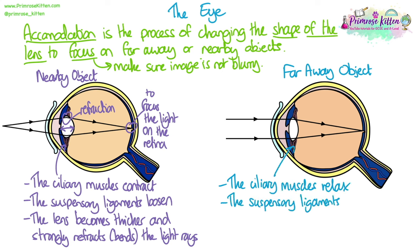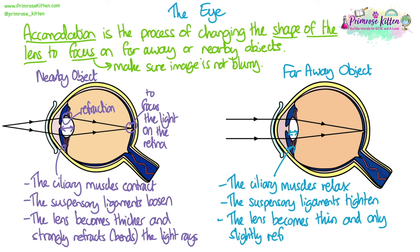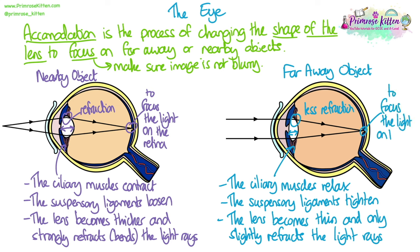For far away objects, the opposite happens. The ciliary muscles relax and the suspensory ligaments tighten, which pulls the lens and makes it thinner and flatter. This means there is less refraction, so it doesn't bend the light as much, but it still allows the light to focus on the retina.